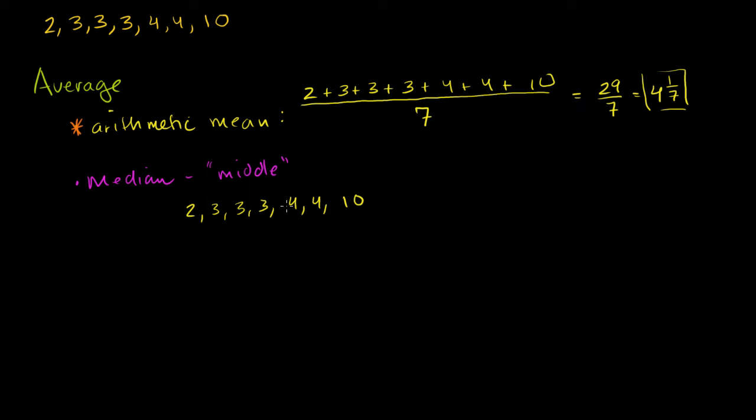So let's see, we have seven numbers right here. The middle number, if I go 1, 2, 3 to the right, we're there. If we go 1, 2, 3 to the left, we're there. The middle number is that 3 right there.